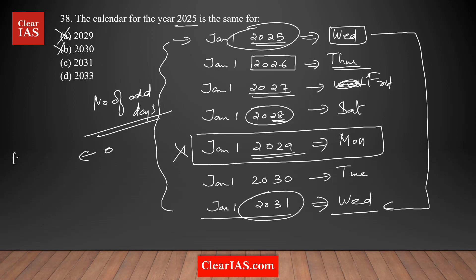The number of odd days should be zero, or any multiple of seven — which is essentially the same as zero. So you just need to check between 2025 and any of the given years whether the number of odd days in between is zero or not. For 2031, it is zero, so option C is the right answer for this question.